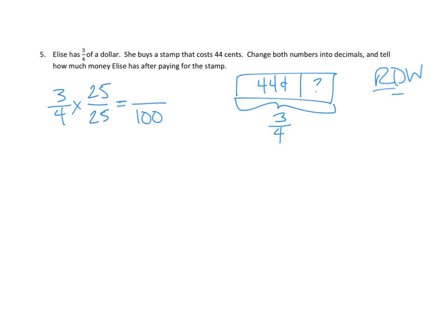So what do we need to multiply the numerator by then? Well, the same thing, right? We need to make sure that we're not really changing the value of three-fourths. So we're just changing the fraction into a new equivalent fraction. Three times 25 is 75. And so we can say that Elise had seventy-five hundredths of a dollar, or 0.75. Hey, we've done the first part, right? We've changed the first number into a decimal.